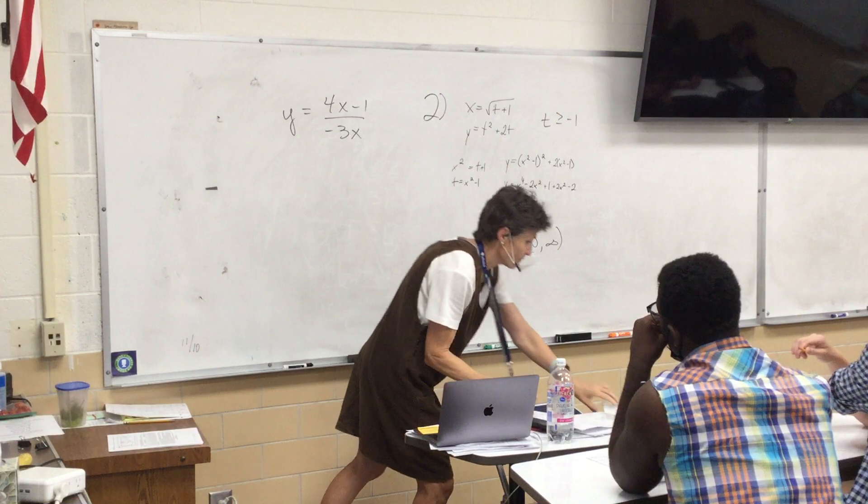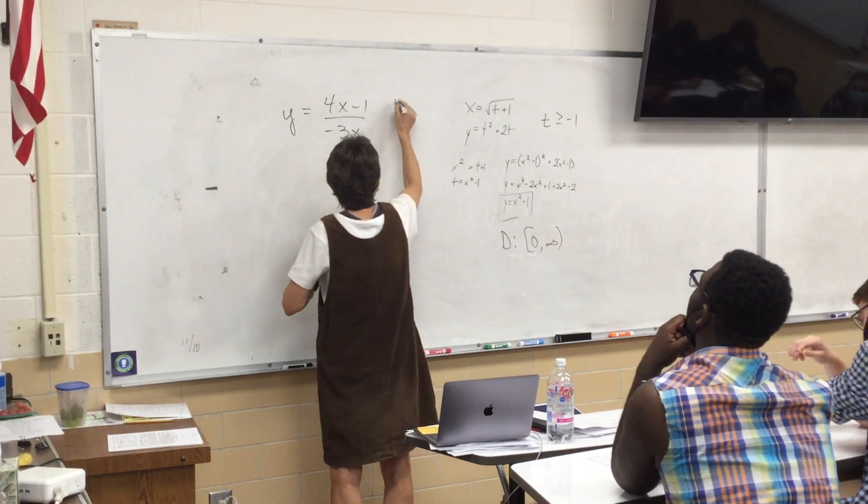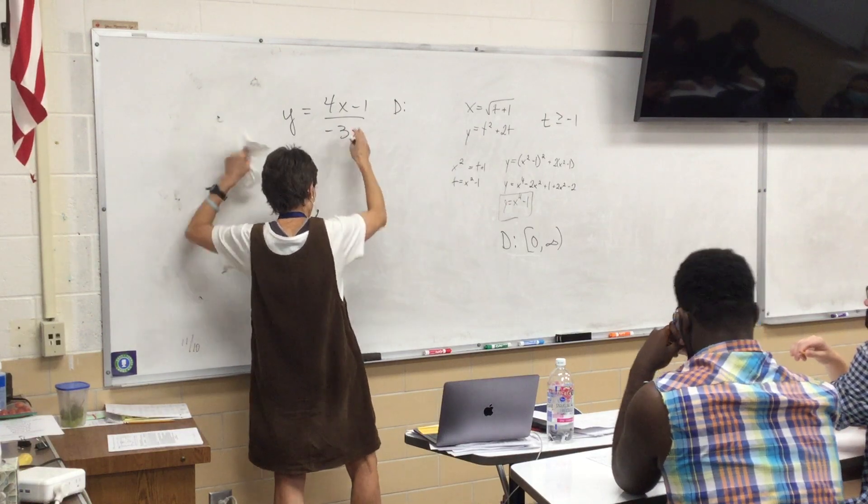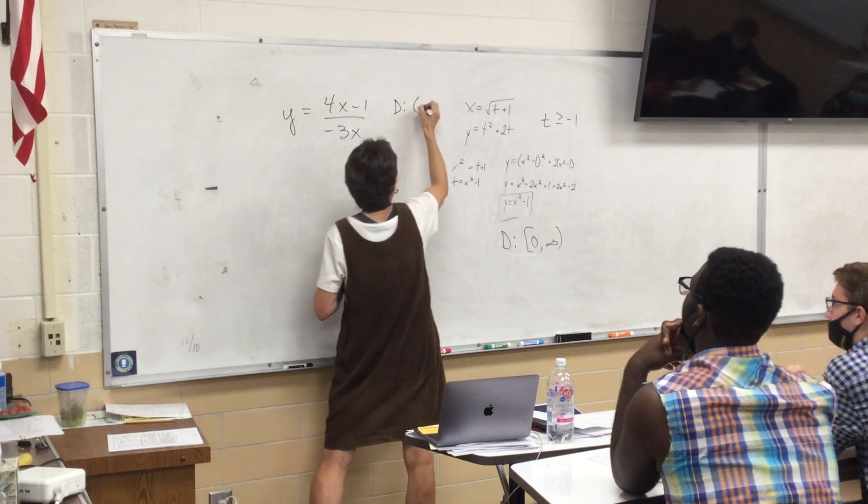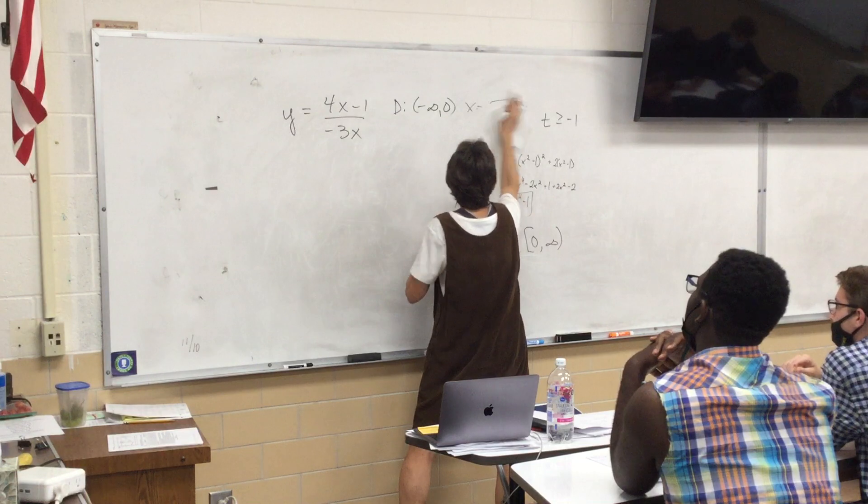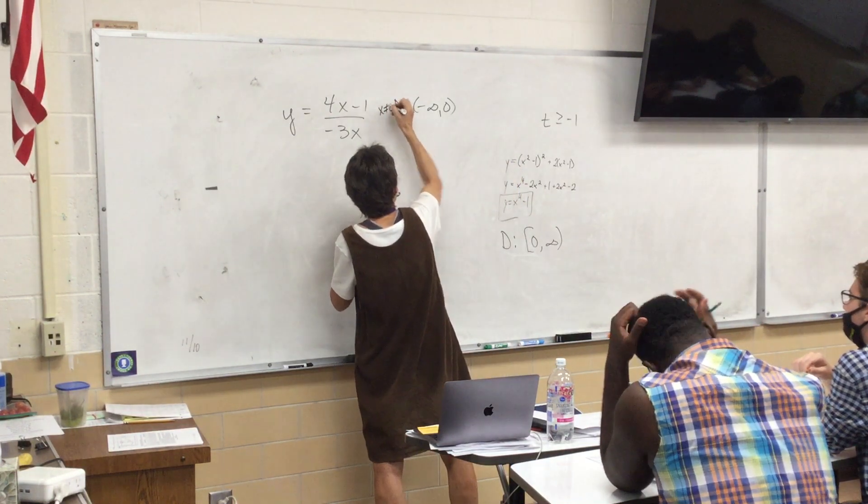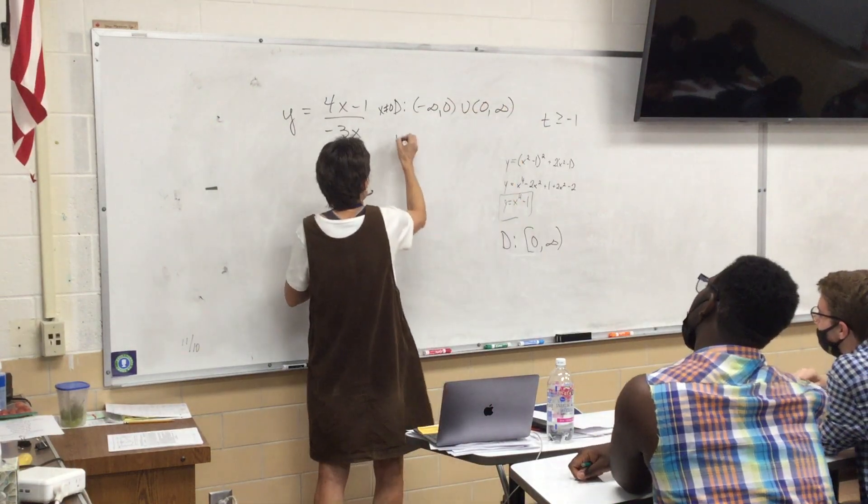By the way, just for fun, not necessary, but just for fun, what's the domain of this original? This is the original problem. What's the domain? Can't be 0, right? So, I'll write it out longhand. Basically, we're saying X can't be 0. But if we write it out properly, it looks like this.